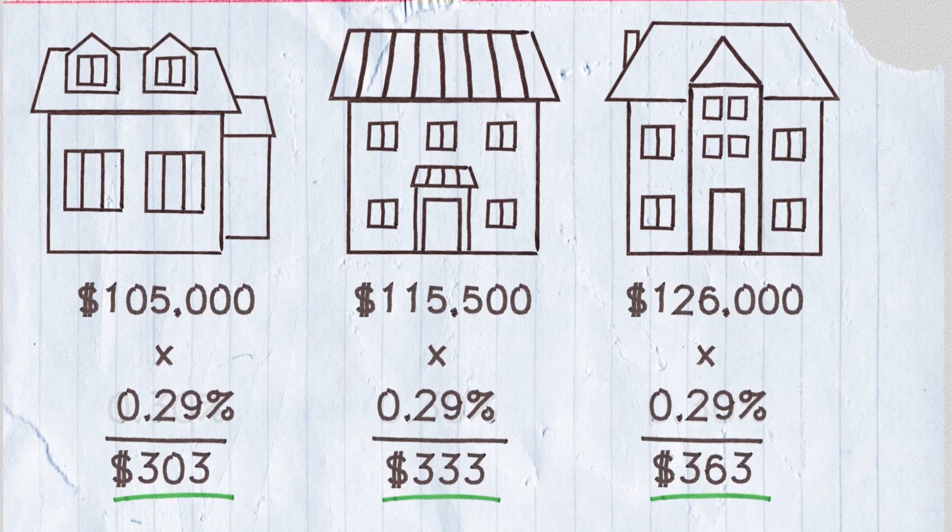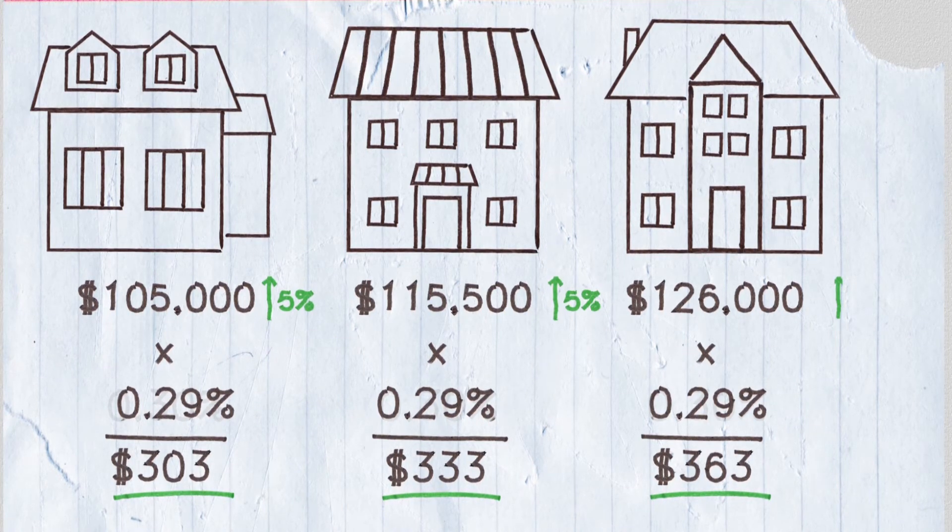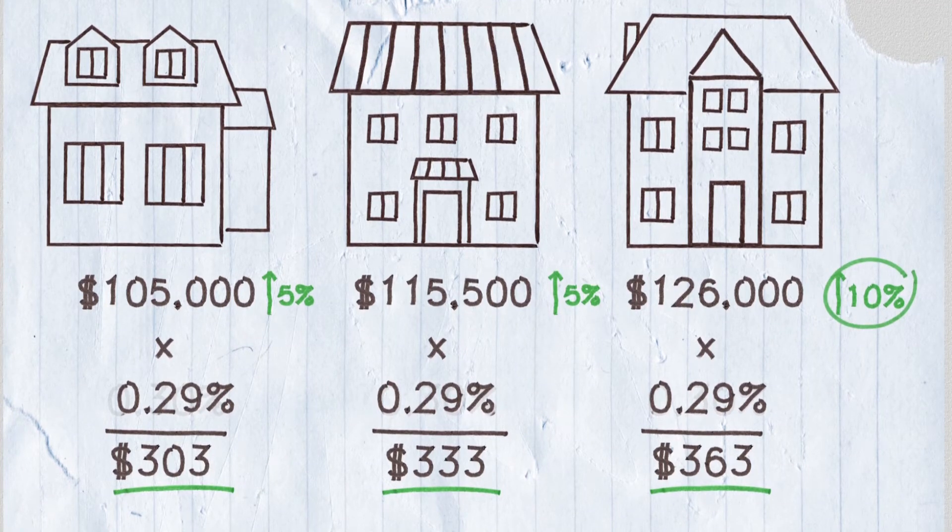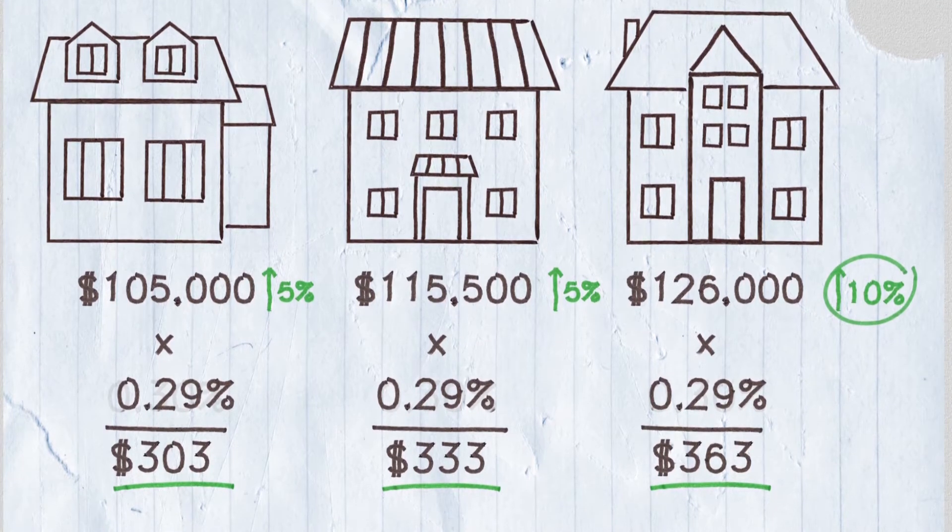Now, let's say another four years has gone by and these homes are reassessed. During this time, the house on the right became more valuable in the market than the other two. Okay, so, time for a little more math.